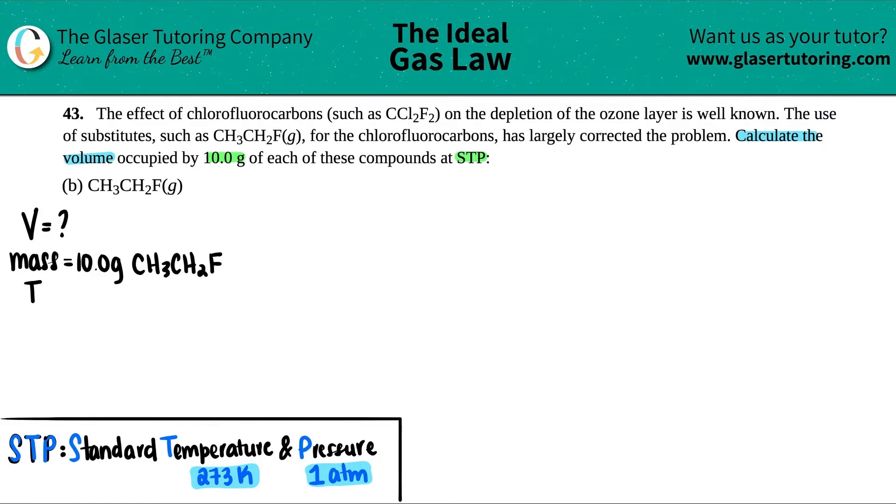So from this information, I know the temperature is 273 Kelvin, and the pressure is 1 atm. So I see that I only have one volume, one temperature, one pressure. I don't have any sets. So we go with the ideal gas formula, which is this one, PV equals nRT.